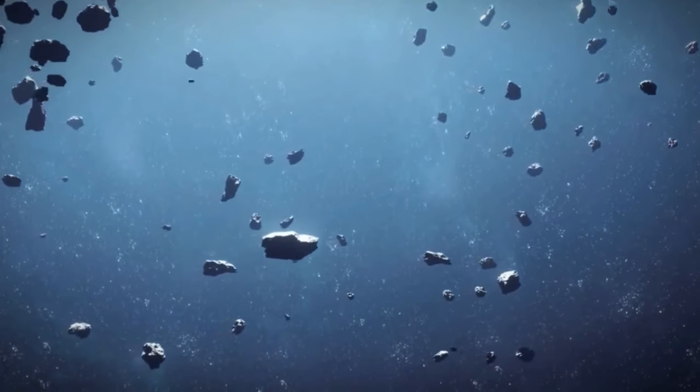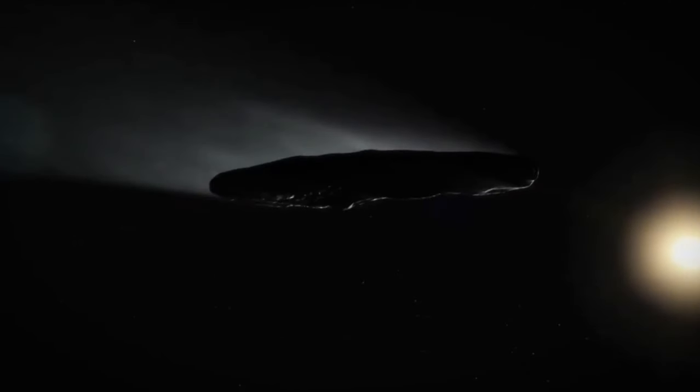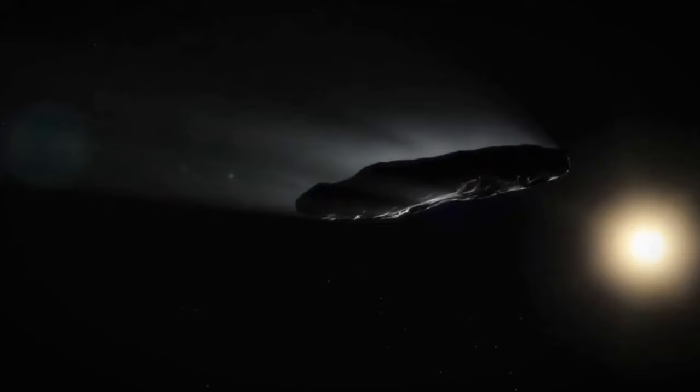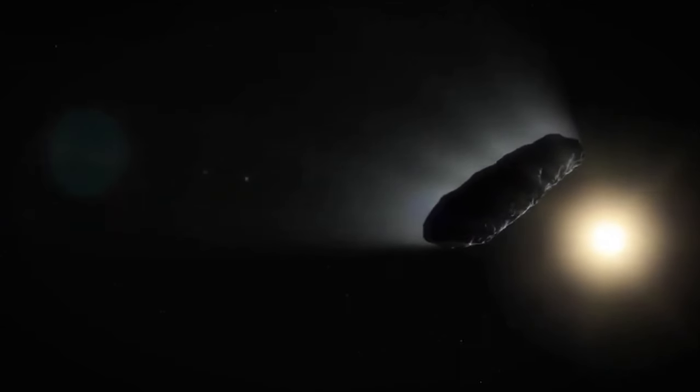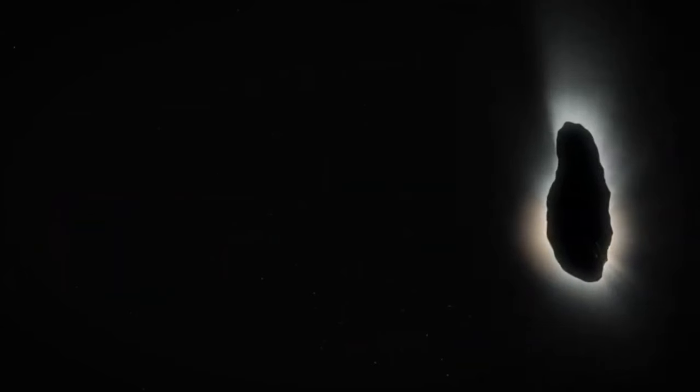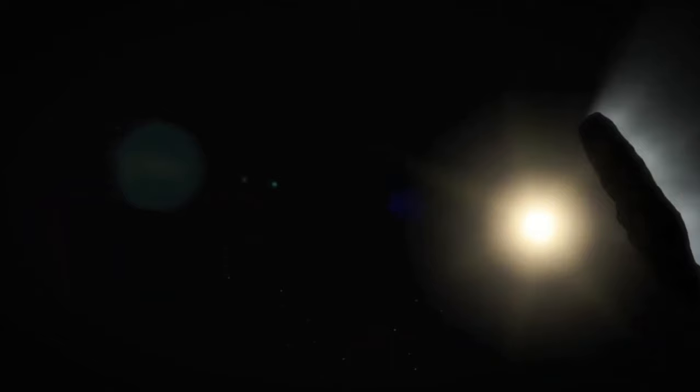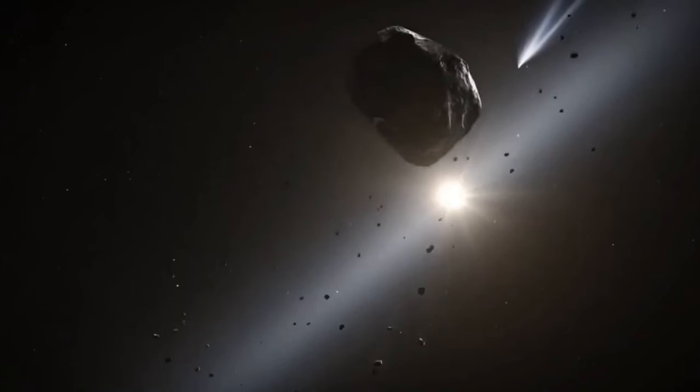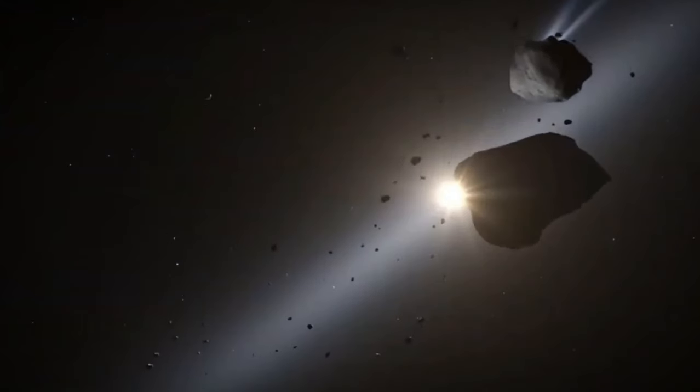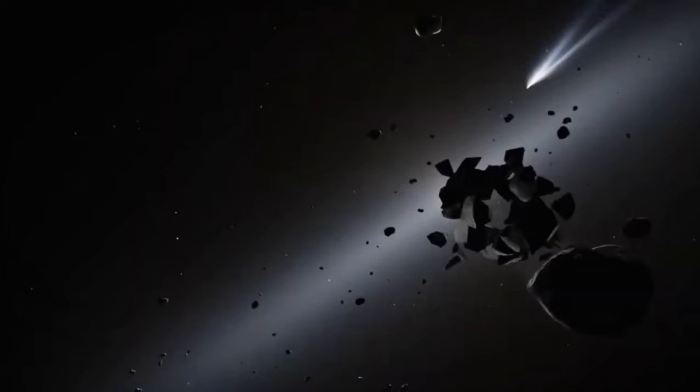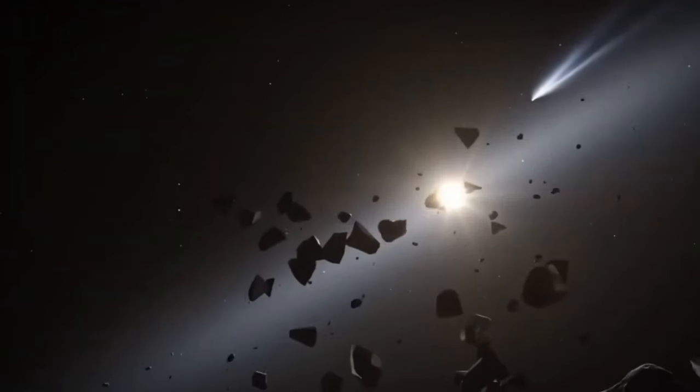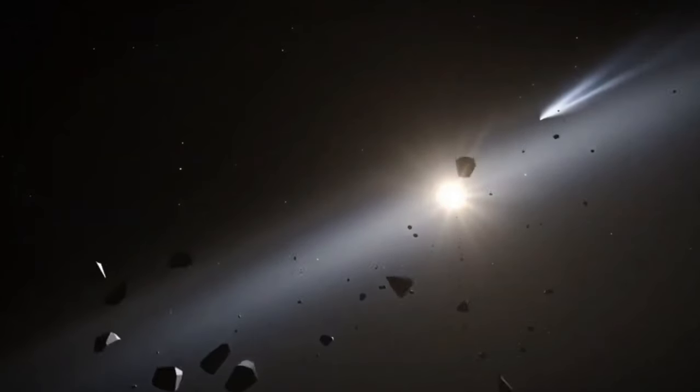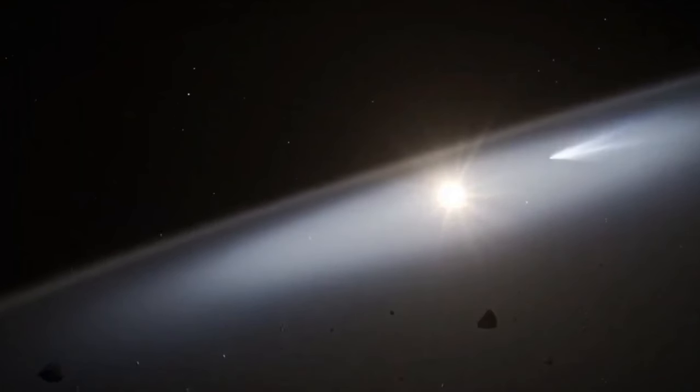Moreover, its reddish hue, akin to outer solar system objects, coupled with its inert nature, devoid of any dust, signifies its dense composition, likely comprising rock and potentially metals, devoid of water or ice. Its surface's reddish tint suggests eons of irradiation from cosmic rays. These characteristics imply that Oumuamua has traversed the Milky Way for hundreds of millions of years, detached from any stellar system.